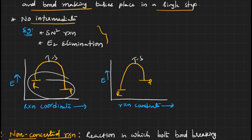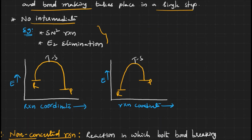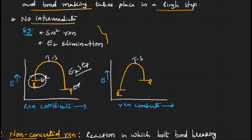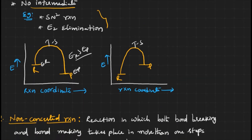On the x-axis we have the reaction coordinate and on the y-axis we have energy. This is the energy of the reactant and this is the energy of the product. The energy of the reactant is greater than the energy of the product, meaning some energy has been released during the reaction. If energy is released during the reaction, it is an exothermic reaction. This is an exothermic concerted reaction.